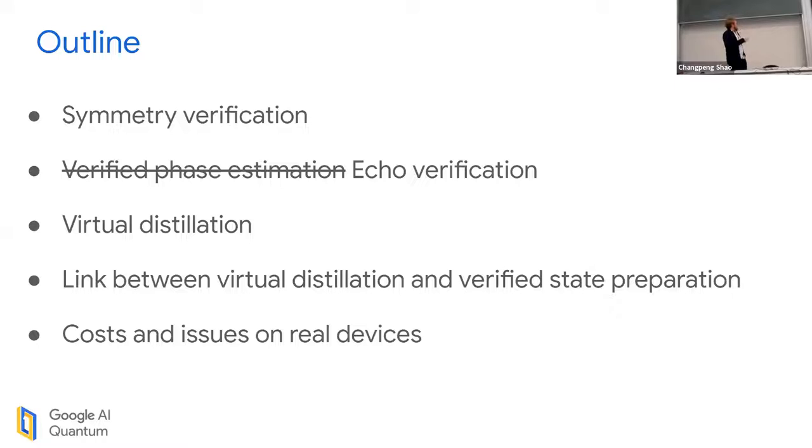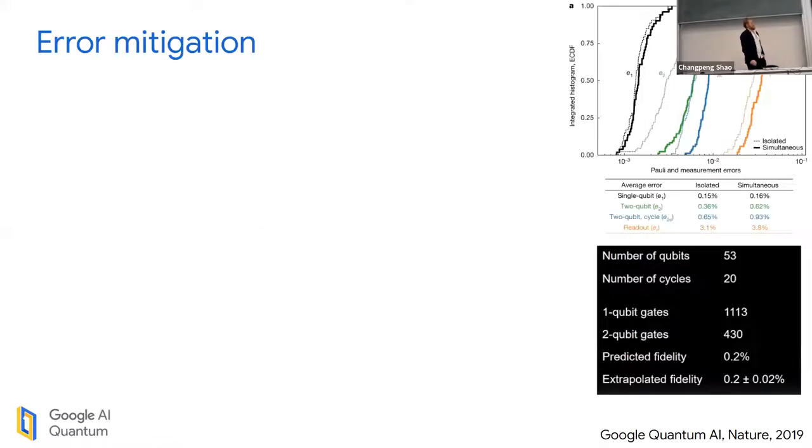I'm going to talk about three types of error mitigation. I'll start with symmetry verification, then move on to an error mitigation technique that's incredibly poorly named. We want to rename it to echo verification due to its likeness to a Loschmidt echo. Then I'm going to talk about virtual distillation.